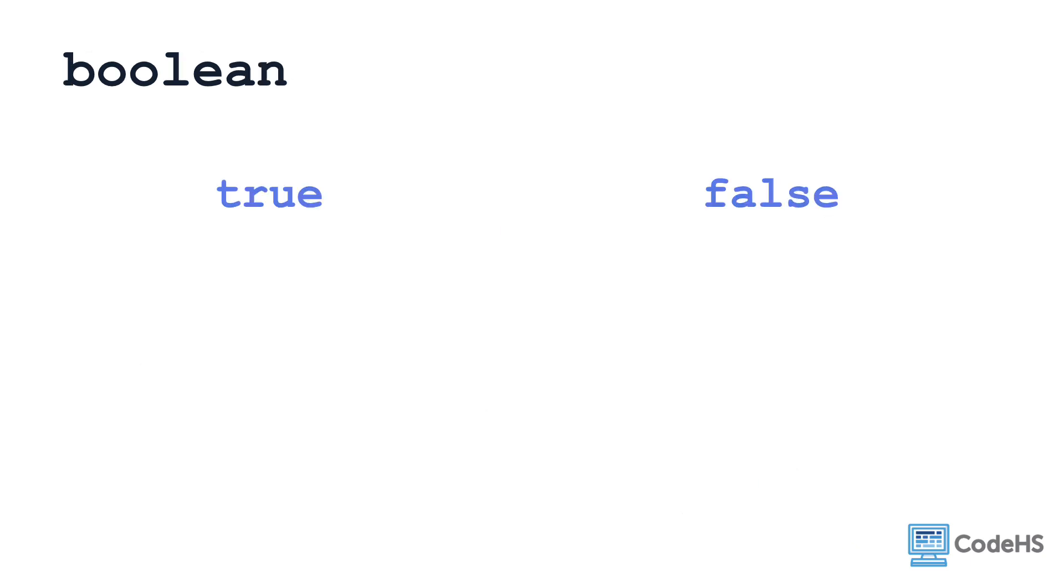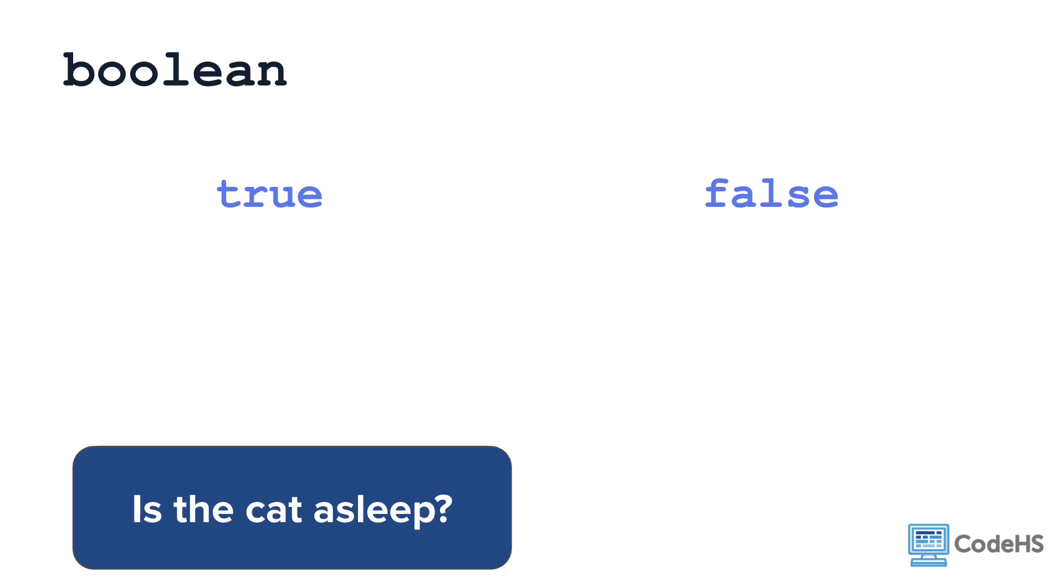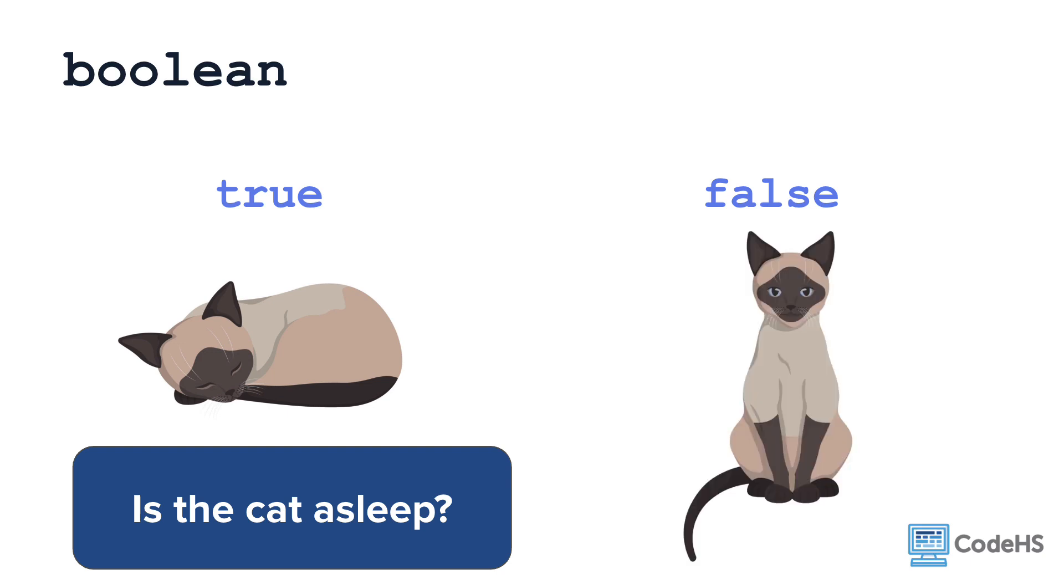The boolean data type stores only two values, true or false. As an example, you would use the boolean data type to store if the cat is asleep. If the cat is asleep, the value would be true. If the cat is awake, the value would be false.